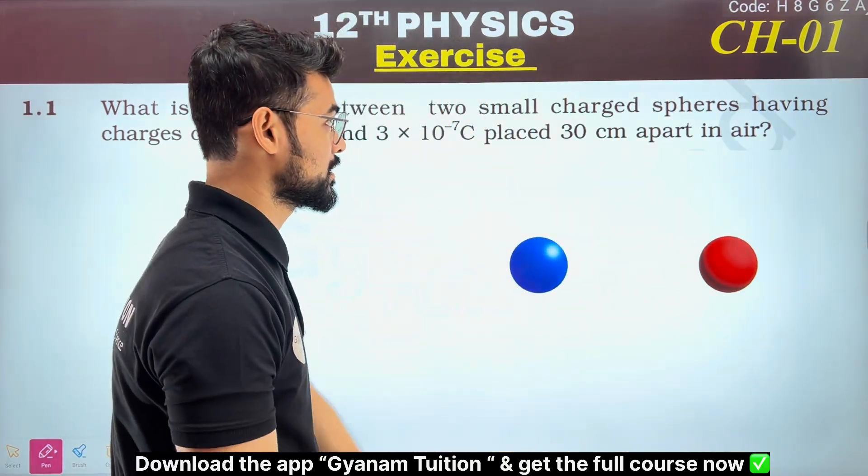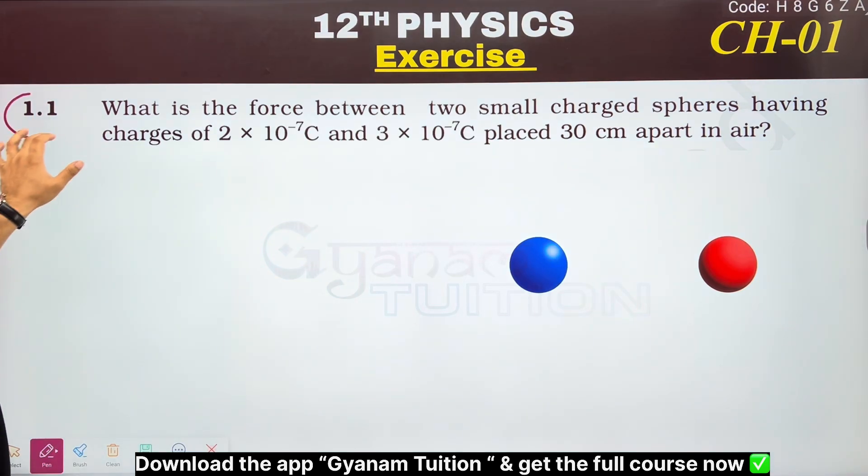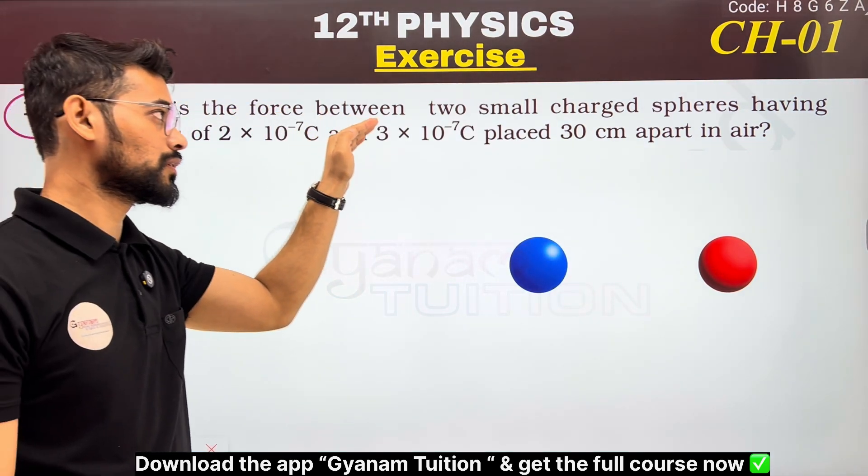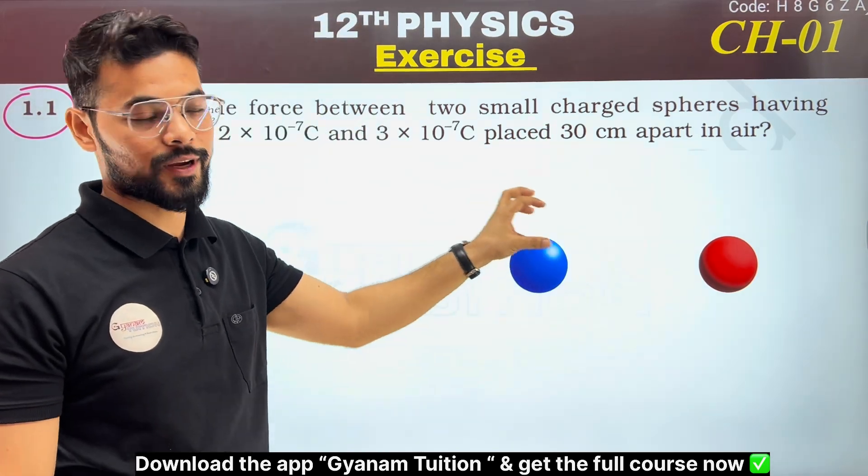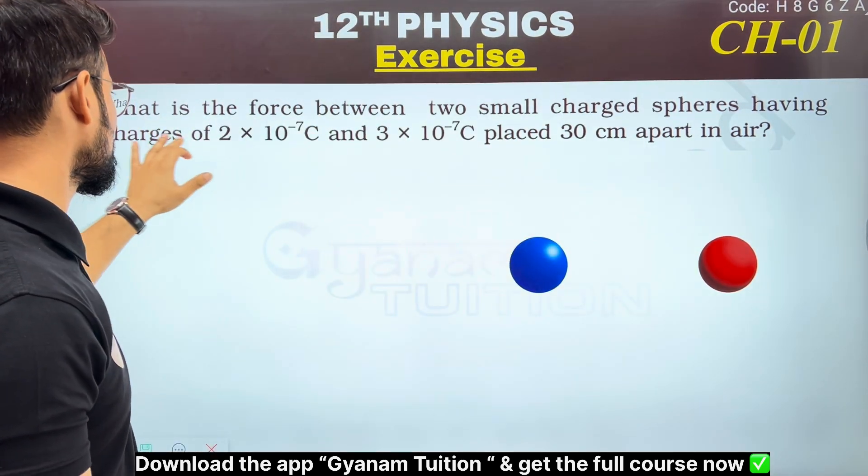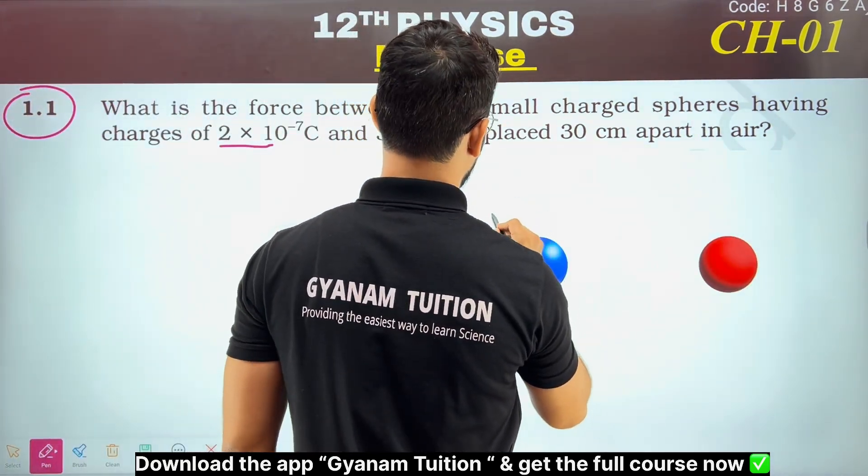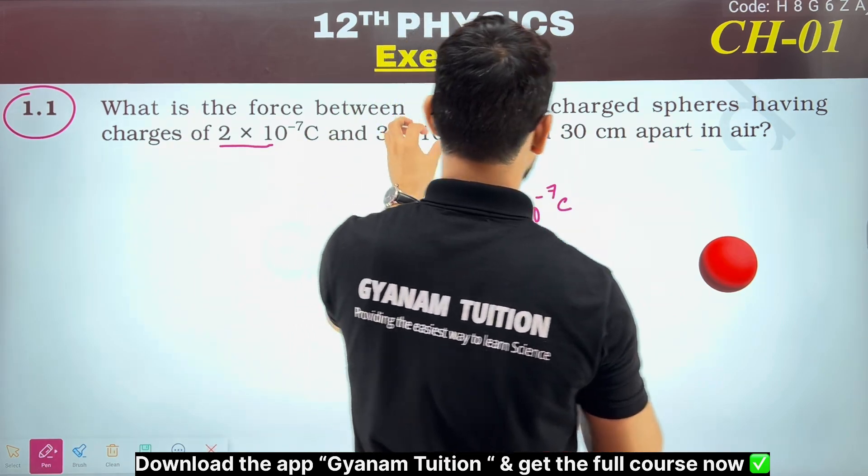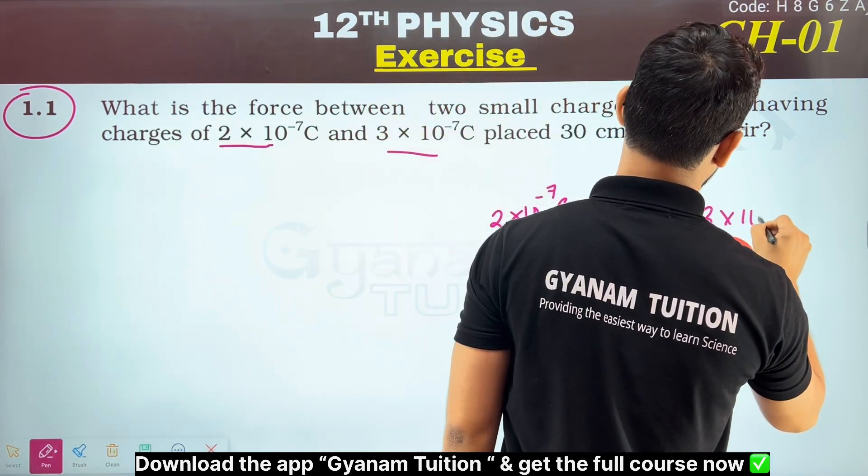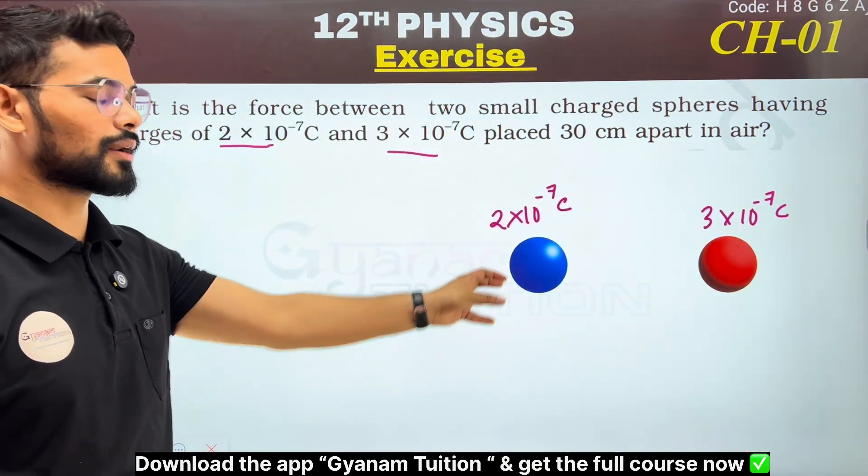In cluster physics, NCERT Chapter 1, Exercise 1.1, Question 1: What is the force between two small charged spheres having charges 2×10⁻⁷ C and 3×10⁻⁷ C? The spheres have charges 2×10⁻⁷ coulomb and 3×10⁻⁷ coulomb, with plus charges indicating a repulsive force.